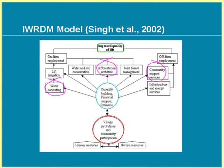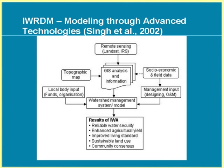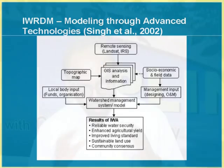Since we are discussing soft computing techniques and tools, we explore how advanced technologies can be used for IWRDM at watershed scale. Remote sensing provides a lot of information for modeling, land use, and other purposes. Remote sensing data can be put into a GIS environment to develop a watershed management system, which can be effectively incorporated into a management information system. Modern tools — remote sensing, GIS, and soft computing or modeling techniques — can enhance output on a watershed or river basin basis.